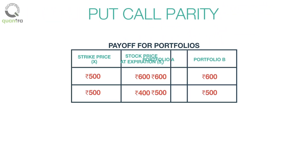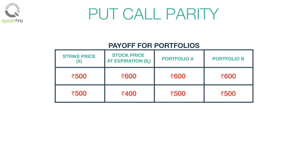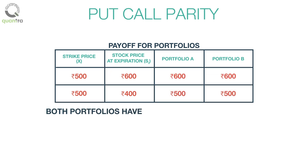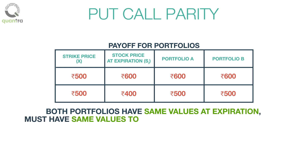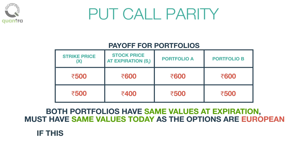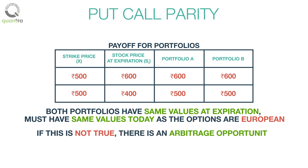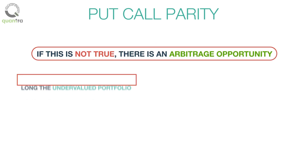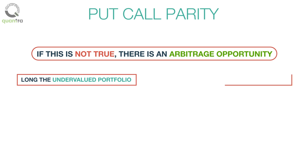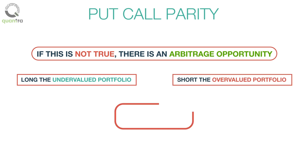From the table, we can summarize that both portfolios A and B are worth the maximum of ST or X. Since both portfolios have the same values at expiration, they must have the same values today, as the options are European and cannot be exercised prior to expiry. If this is not true, there is an arbitrage opportunity — a trader can go long on the undervalued portfolio and short the overvalued portfolio to make risk-free profit at expiry.